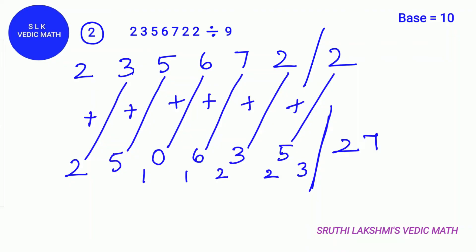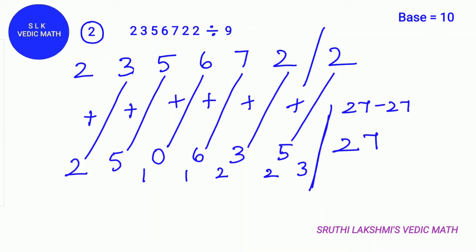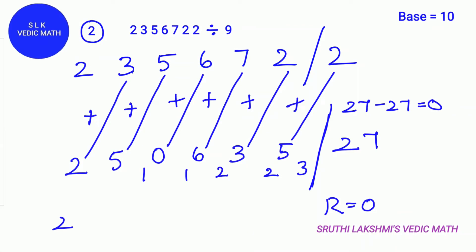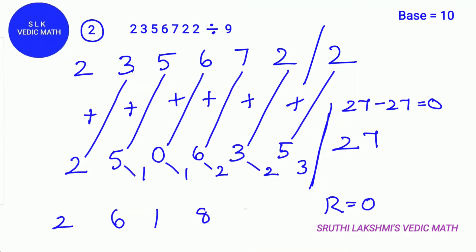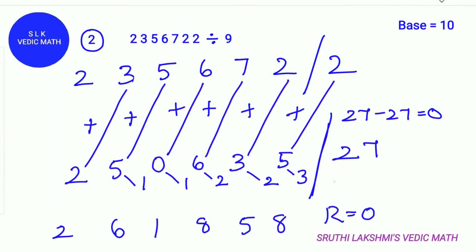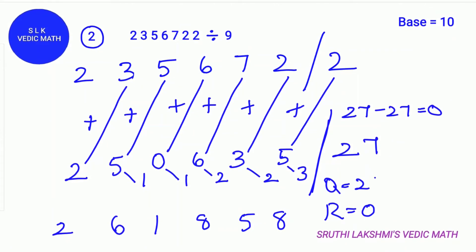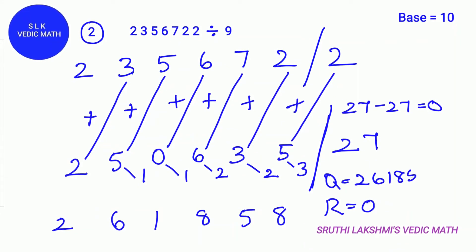Next we do 27 minus 27. Because 9 times 3 is 27. So 27 minus 27 is 0. So the remainder will be 0. For the quotient we write down the 2 as it is. Next we add 5 plus the carry 1. 5 plus 1 is 6. Next we do 0 plus 1 is 1. Next 6 plus 2 is 8. Then we do 8 plus 3 plus 2 is 5. After that we do 5 plus 3 is 8. So the quotient will be 2, 6, 1, 8, 5, 8.